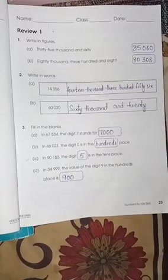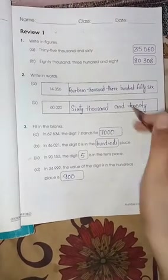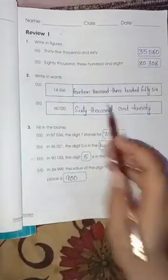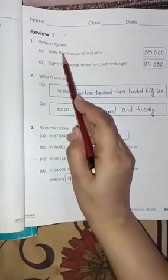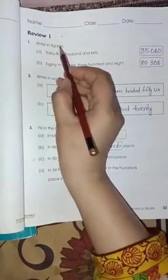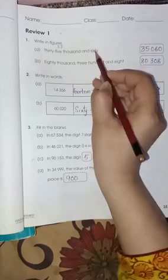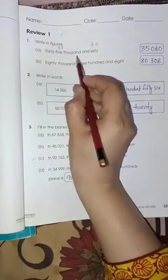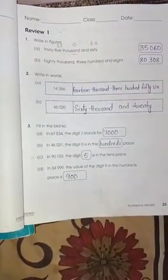Now, after completing the chapter, we have the review which is from the whole chapter that we have learned. Write in figures 35,000 and 60. We don't have any hundreds here, so we are going to add 0. So, 3, 5, 0, 6, 0.